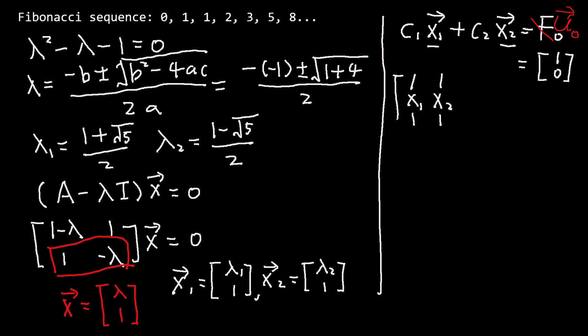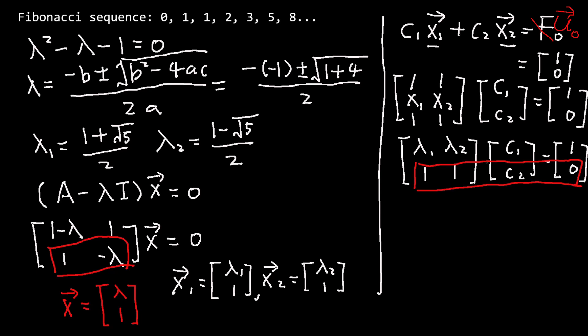From this equation, we can build a system of equations to solve for C_1 and C_2. From the second row, C_1 plus C_2 equals zero, so C_1 equals negative C_2.